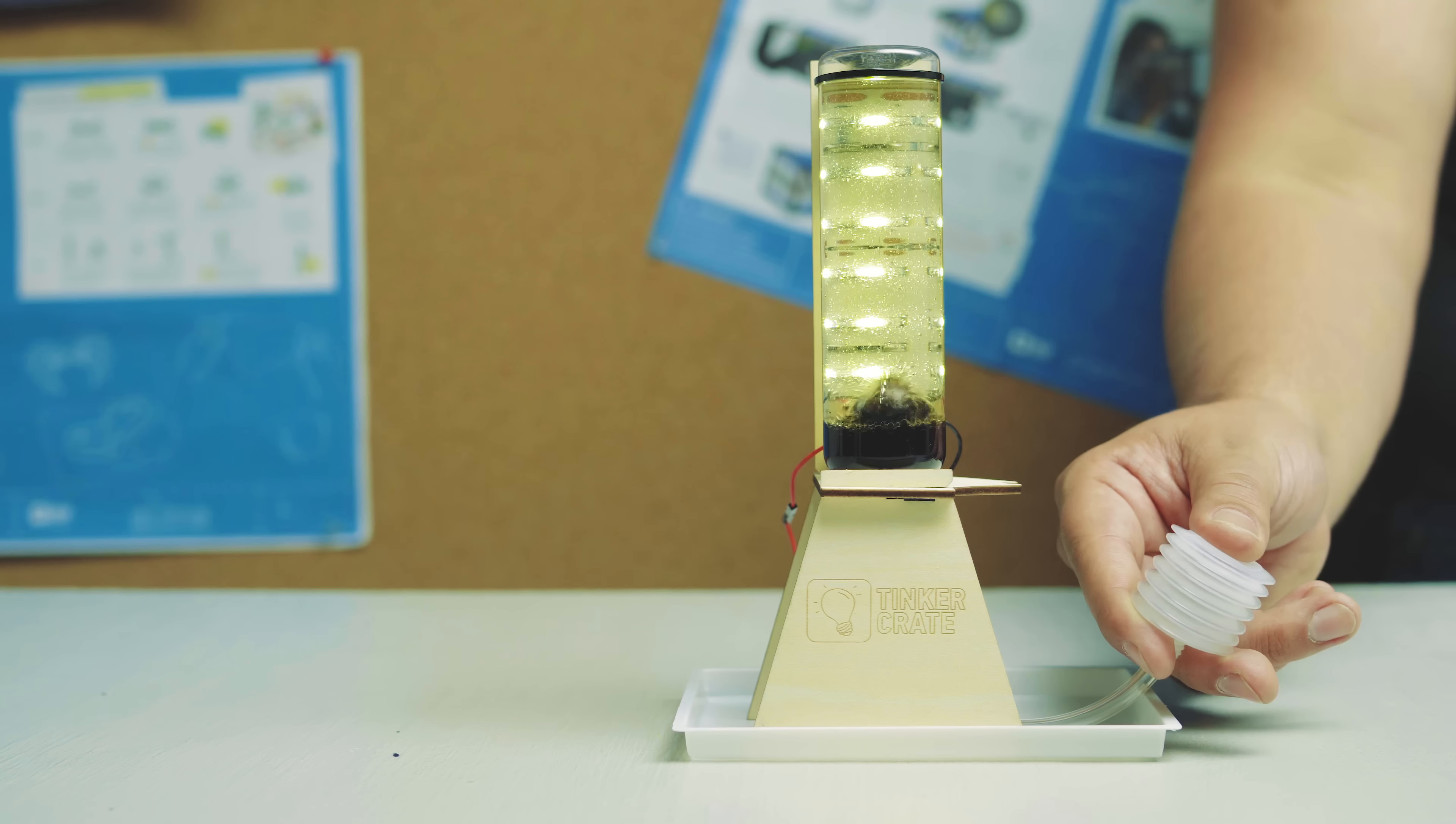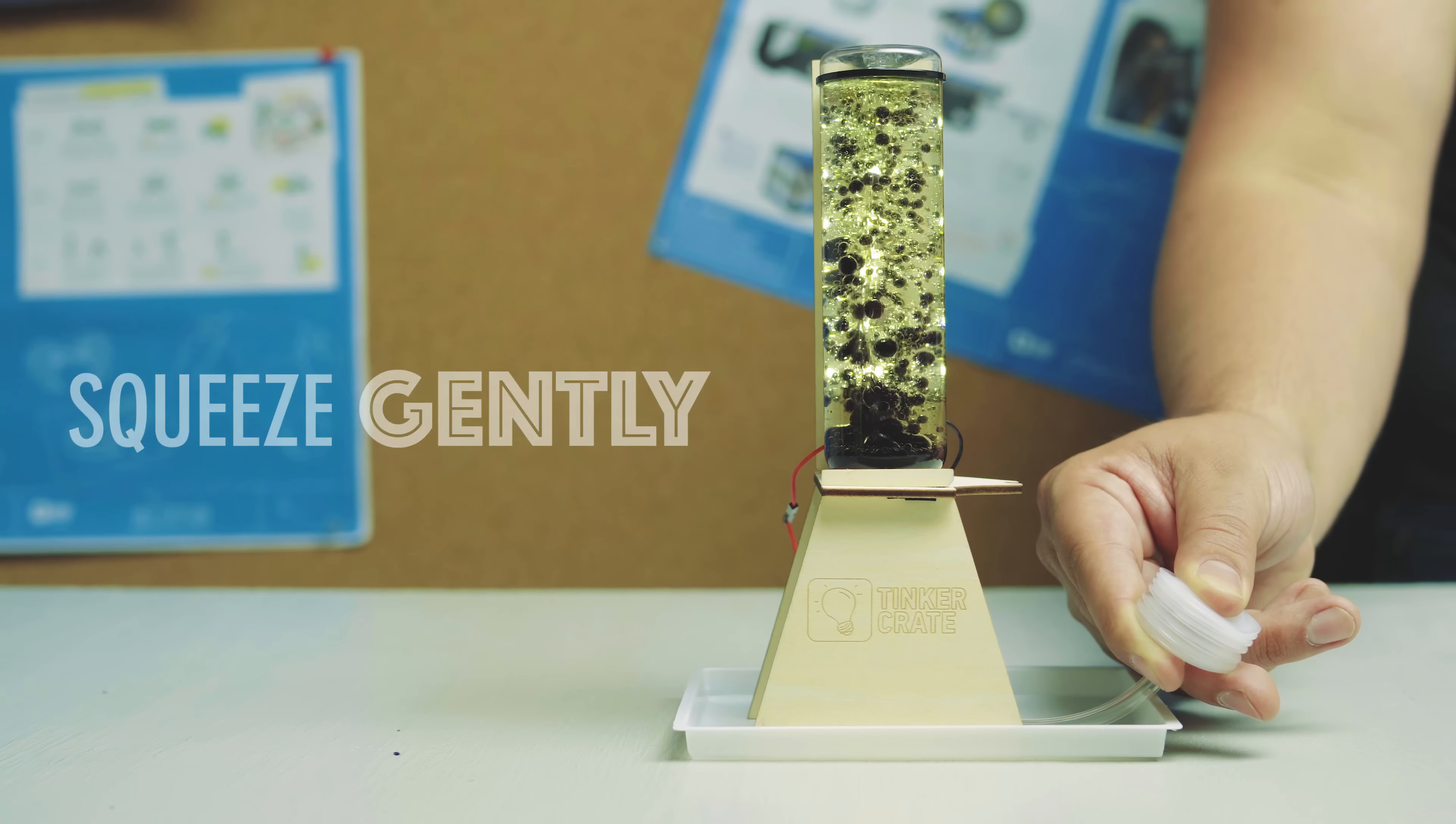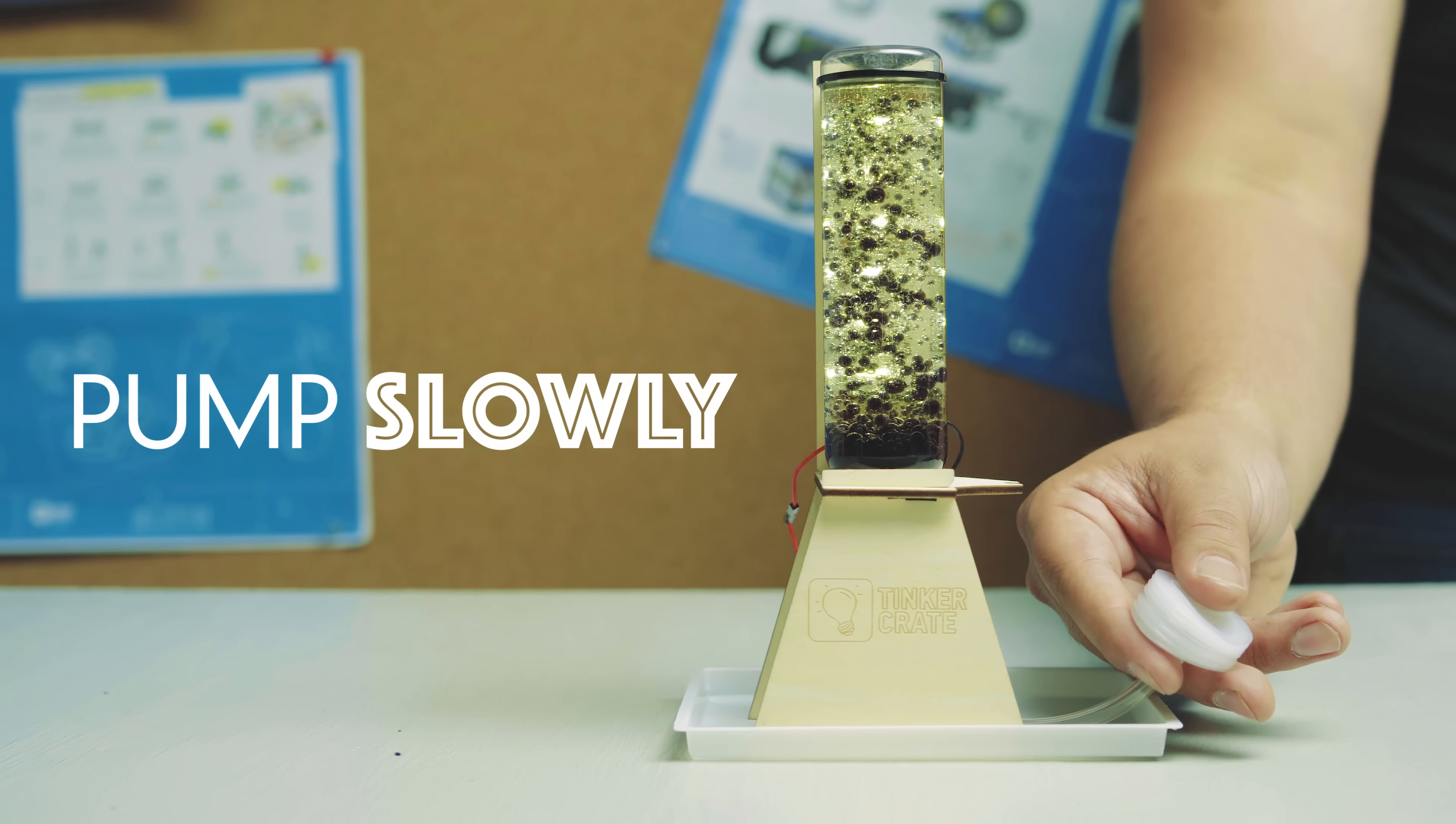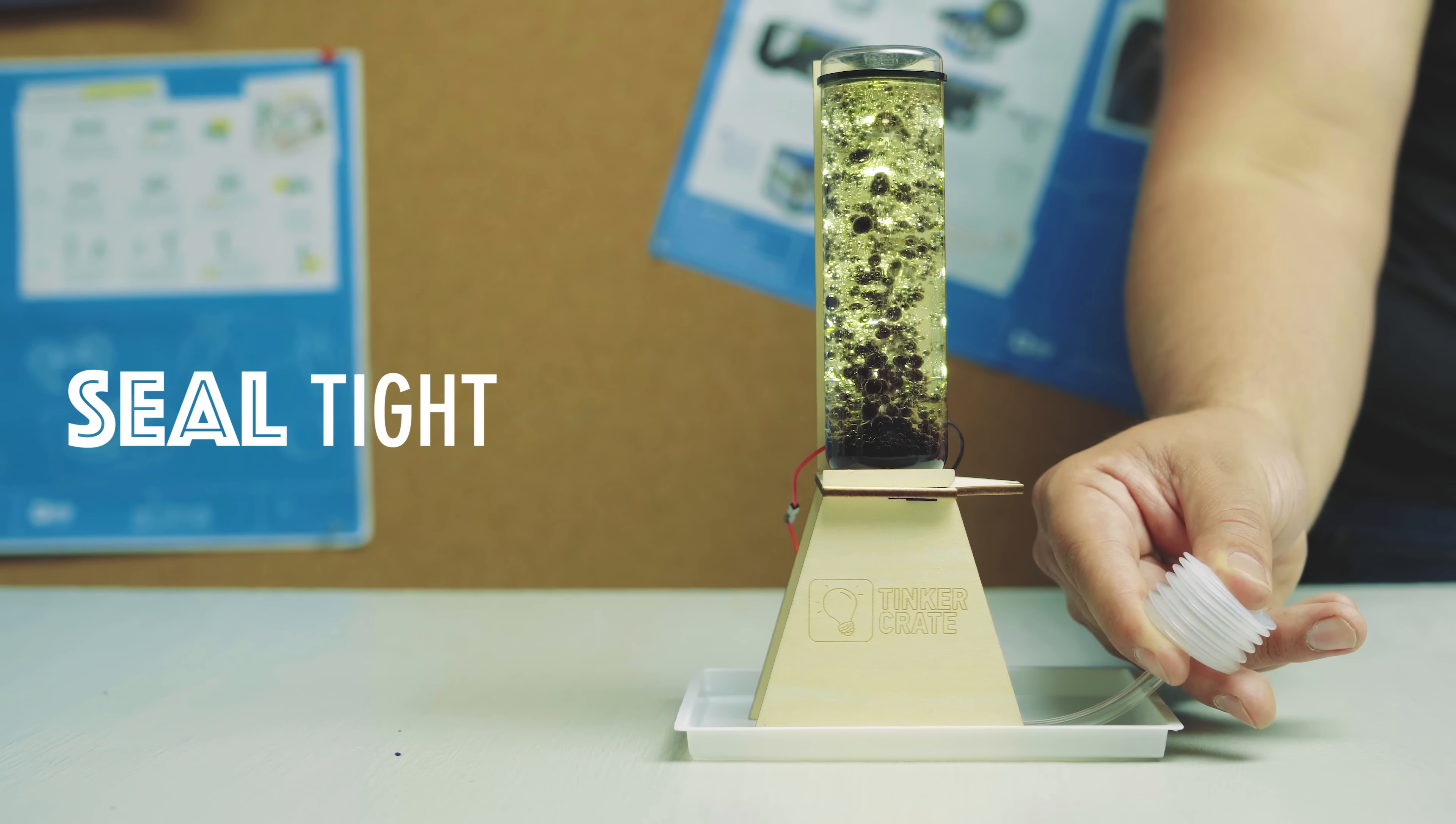Here's some tips for using your bubble lamp. Always squeeze the pump gently. If you squeeze too hard, oil might leak out the top of the bottle. Leave a little bit of time in between each pump. If you pump too quickly, your lamp will fill up with lots of little bubbles. If you start to see leaks, stop and make sure all of the seals are tight.